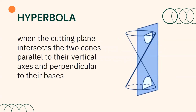Finally, when the cutting plane intersects the two cones parallel to their vertical axis and perpendicular to their bases, then a hyperbola is formed. Remember that this is the vertical axis. If you notice, the vertical axis and the cutting plane are parallel. For that case, this is your hyperbola.